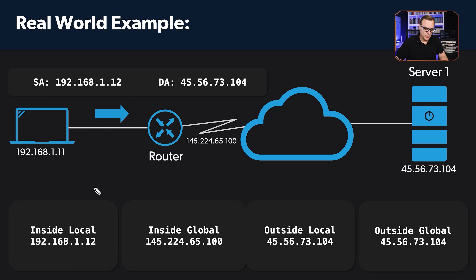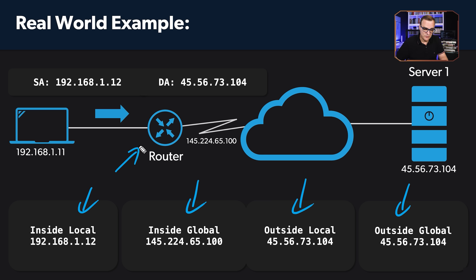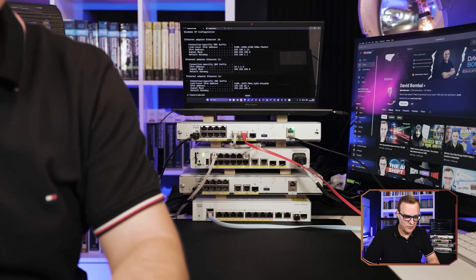Now let's look at a practical example and learn the terminology that Cisco uses. You need to learn terms such as inside local, inside global, outside local, and outside global. Those terms can be really confusing when you learn how to set up NAT on a Cisco router, but it's really important that you learn them. You need to understand what it means when we talk about inside, outside, local, and global.